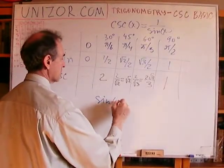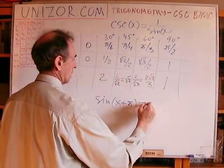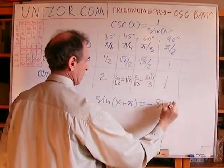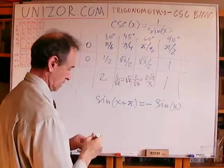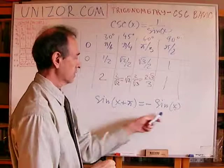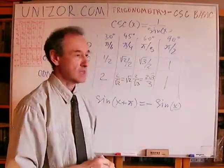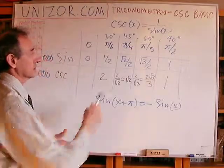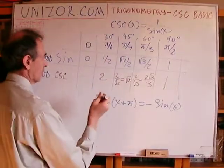And also, you know that this property of sine. So if you add pi, 180 degrees, you will invert the sine, which is an ordinate of an angle. So that actually makes exactly the same rule for cosecant. Cosecant of x plus pi also will be equal to negative cosecant of x.